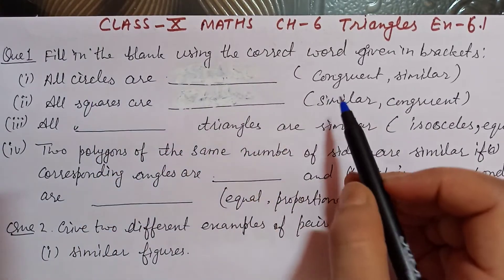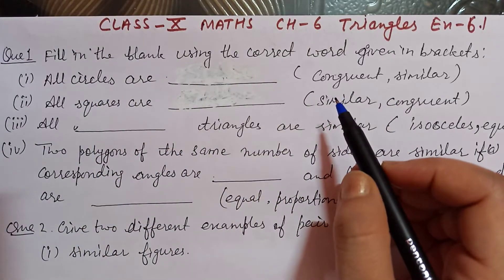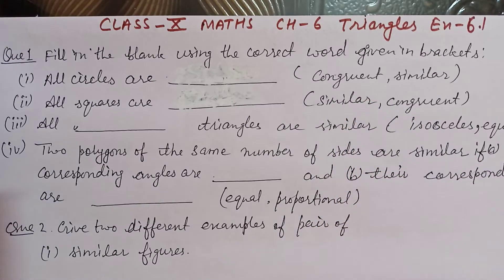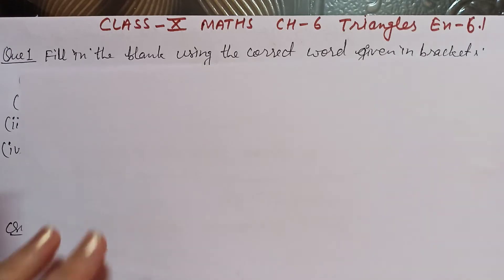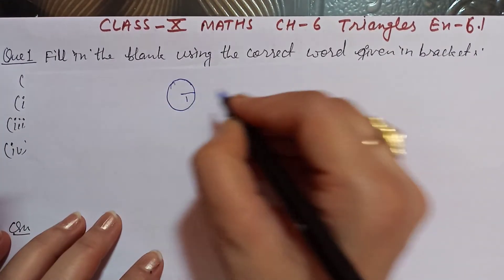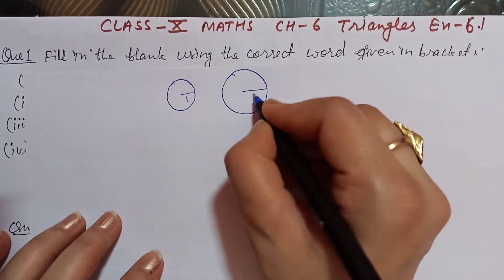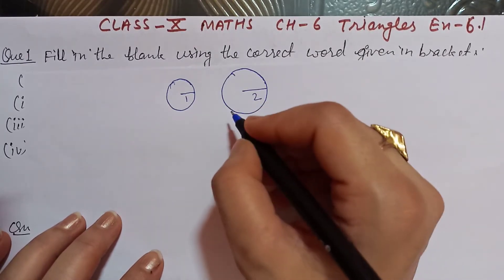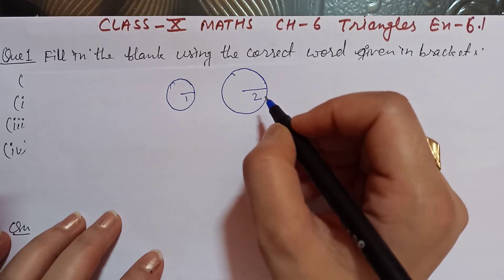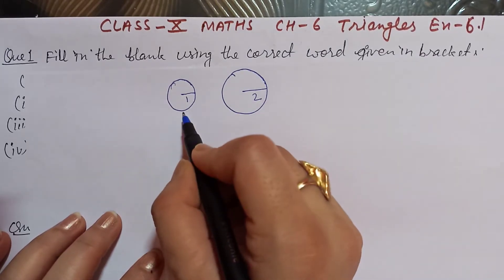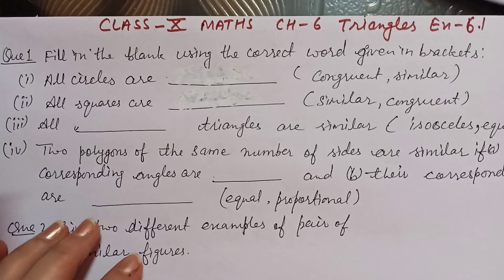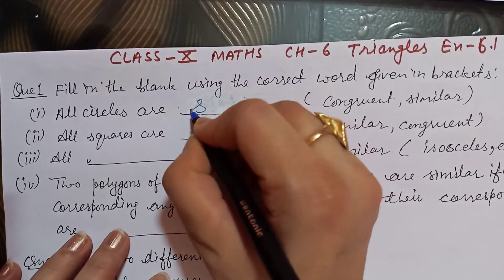First blank: all circles are similar. Here we have a circle with radius 1 cm and a circle with radius 2 cm. These circles will be similar, but they will not be congruent, because the first radius is 1 cm and the second radius is 2 cm. So this figure will be similar.